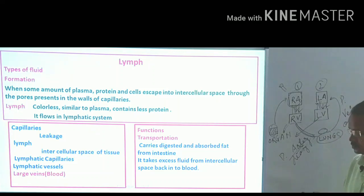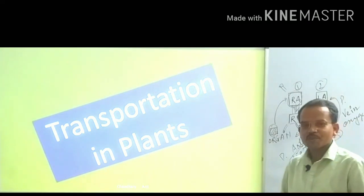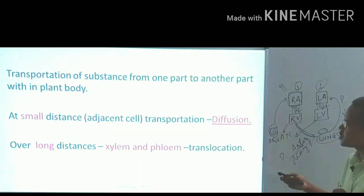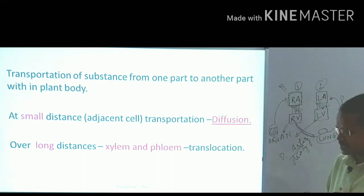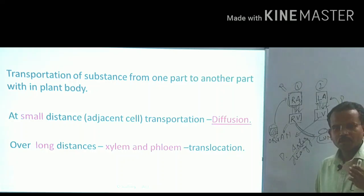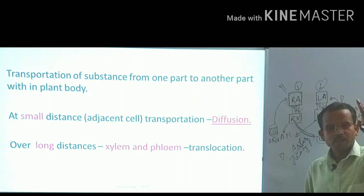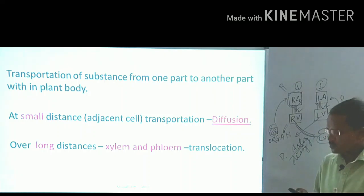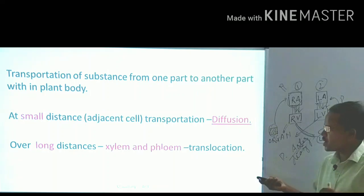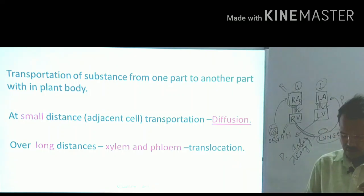Now, transportation in plants. Transportation of substances from one part to another within a plant body is done by xylem and phloem. For small distances, diffusion is sufficient. But for large distances — like in a tall palm tree — diffusion is not enough, so a pumping system is required. In plants, that system is xylem and phloem.